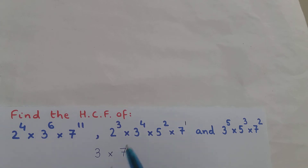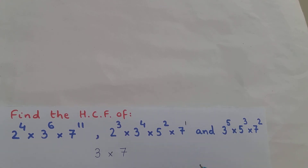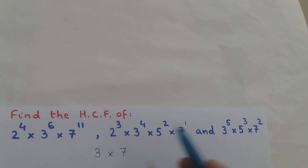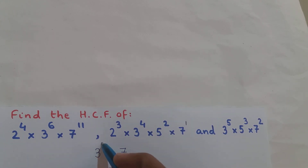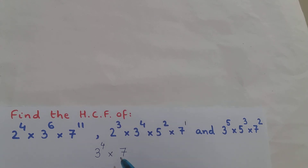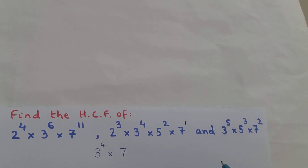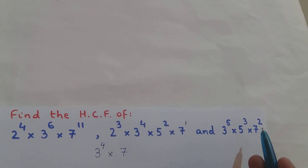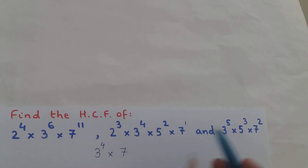Now, what is the exponent of base 3? In the first expression it is 3⁶, in the second it is 3⁴, and in the third it is 3⁵. You pick the smallest exponent: 4 is smaller than 6 and 5, so the exponent of base 3 is 4. For base 7: the first expression has 7¹¹, the second has 7¹, and the third has 7². You pick the smallest exponent.